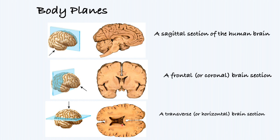The planes are very important because they help save us time, especially when ordering imaging. For example, if you're trying to order imaging to see if something's wrong with the patient's brain stem, a frontal or coronal section would not be the best choice — and definitely not a transverse or horizontal brain section. That concludes our review for today. Thank you, bye.